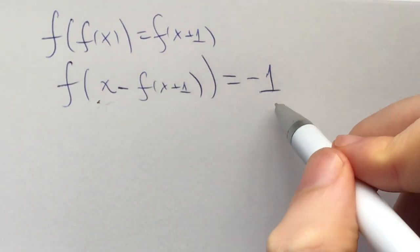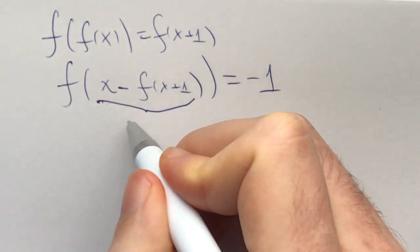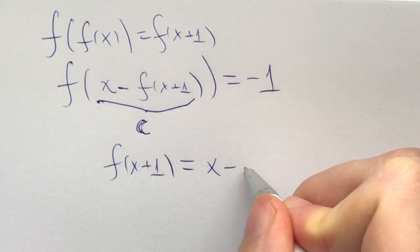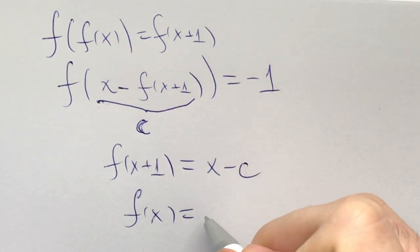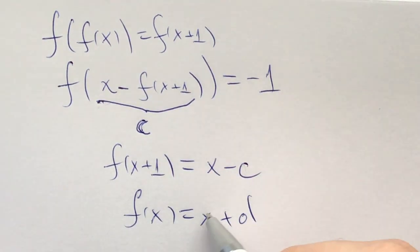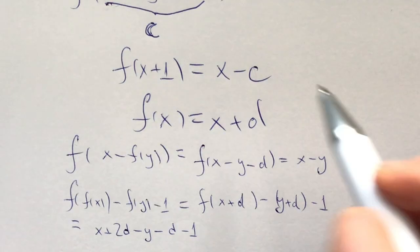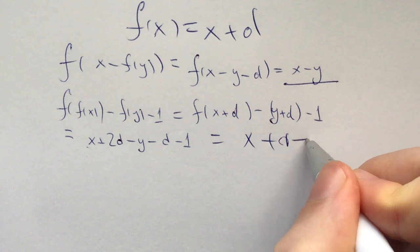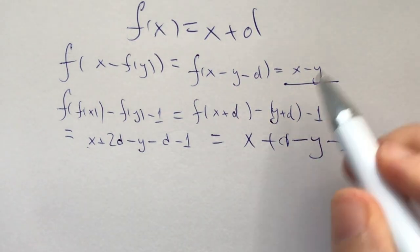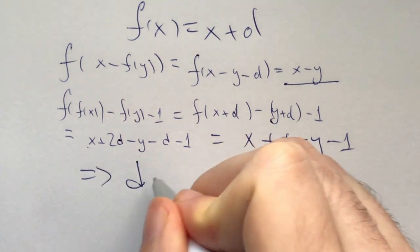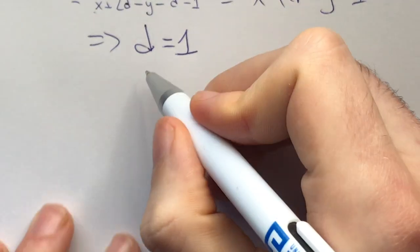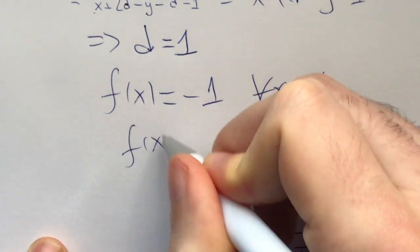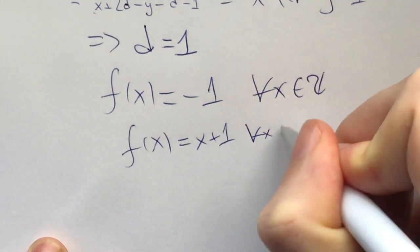Now if f is injective, we know that f of x minus f of x plus 1 equals negative 1, so because f is injective this must be a constant. So f of x plus 1 equals x minus some constant c, i.e., f of x equals x plus some constant d. Plugging back into the original functional equation, the left-hand side equals x minus y and the right-hand side equals x plus d minus y minus 1, so d must equal 1. This gives us f of x equals x plus 1.